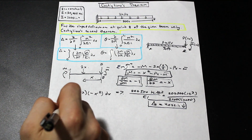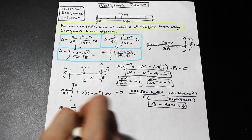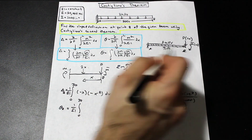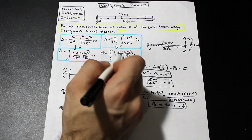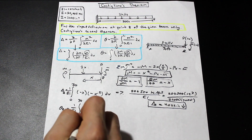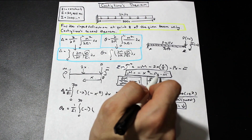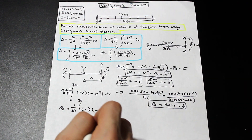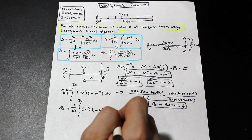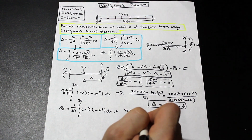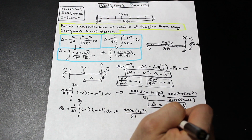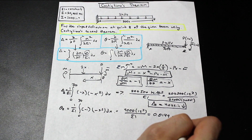For the slope, the setup is exactly the same — same limits (0 to 30), same M expression — but now we use ∂M/∂M̄ = −1. The integrand becomes (−1)(−X²) = X², which integrates from 0 to 30 to give 9,000. Multiplying by 12³ for unit conversion and dividing by EI gives a slope at B of θ_B = 0.0149 radians, clockwise.